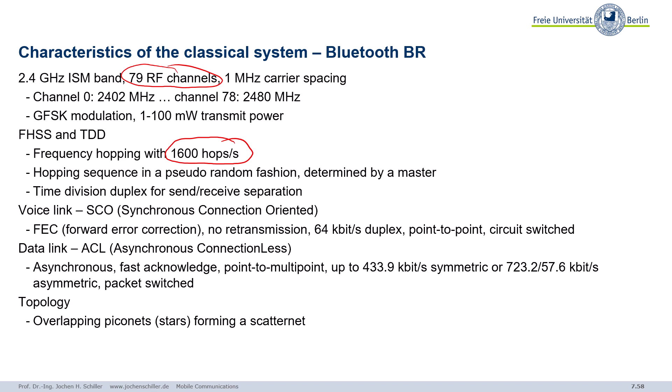Frequency hopping spreads the signal over the spectrum in the ISM band and mitigates narrowband interference — we hop around the spectrum avoiding interfering narrowband channels. Bluetooth offers two link types: one is Synchronous Connection Oriented (SCO) and one is Asynchronous Connection-Less (ACL). SCO links apply forward error correction and are circuit-switched at 64 kilobit per second — classical voice PCM coding as in ISDN. ACL can operate point-to-multipoint and goes up to around 700 kilobit per second, packet-switched.